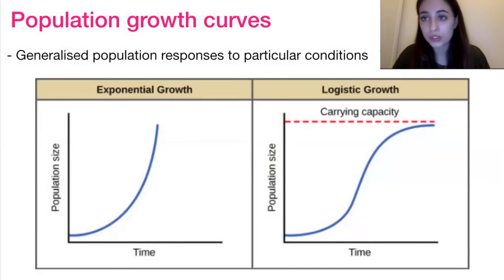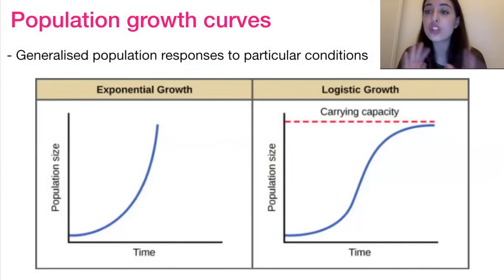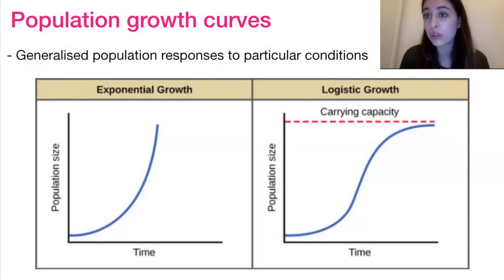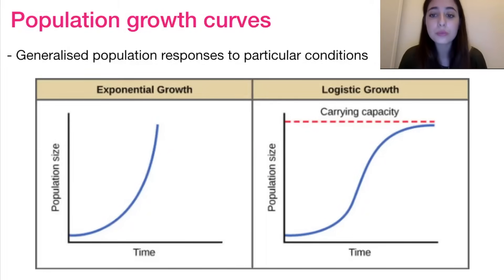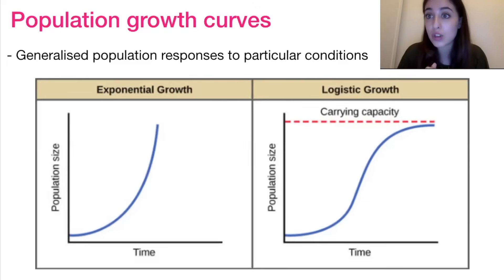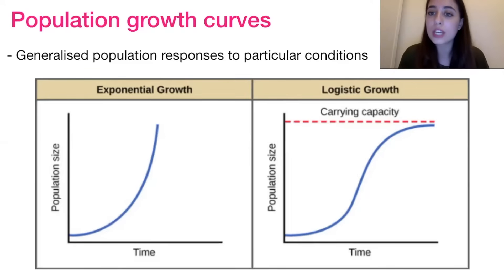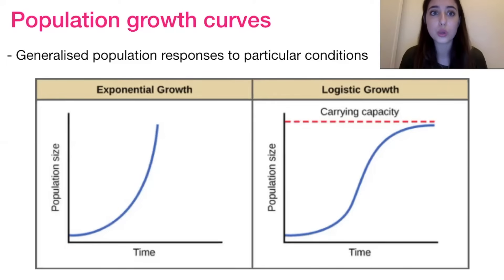Population growth curves come in two forms: the J curve and the S curve. The J curve shows exponential growth — the ideal scenario with no limiting factors and plentiful resources. The S curve shows logistic growth, which is more typical, especially for K strategists. Growth starts exponentially, but as resources become limiting and competition and predation increase, the population size levels off at the carrying capacity — the maximum number of organisms the environment can sustainably support.